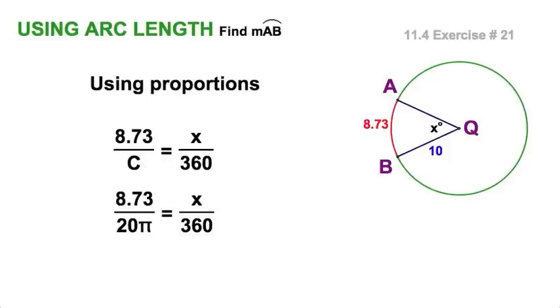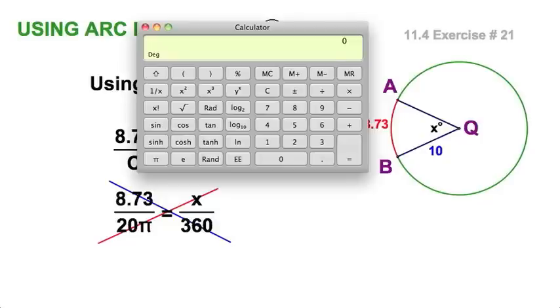I've got 8.73 over 20π as x is to 360. Easy squeezy. Let's do cross products - the product of the red equals the product of the blue. So let's pull out our handy-dandy calculator as we all love to do. I know how you guys do this - you multiply the blue ones here and you can divide by 20π. So let's go: 360 times 8.73, now that's the product of the blue.